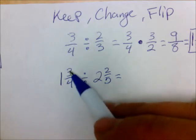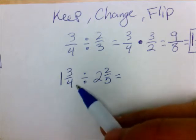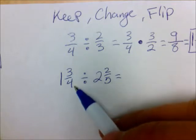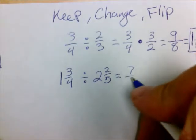we do side times the bottom, plus the top, keep the bottom. So one times four is four, plus three is seven, keep the bottom as four. So we have seven fourths.